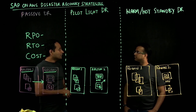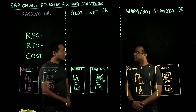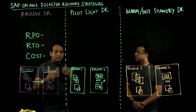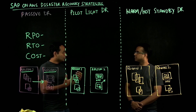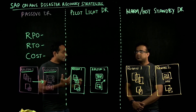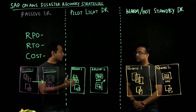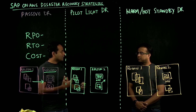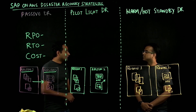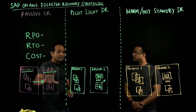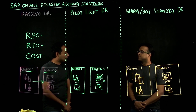Once you replicate these onto the second region, you can restore them. For restoring, you can use a series of tools and methodologies — automate them to achieve and reduce your recovery time objective. But primarily, passive DR relies on your backup and restore method.